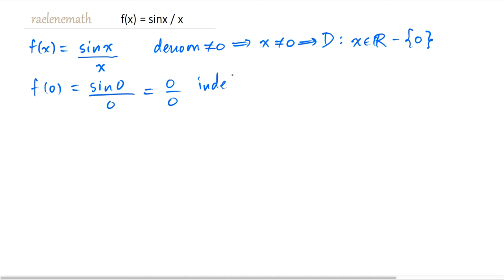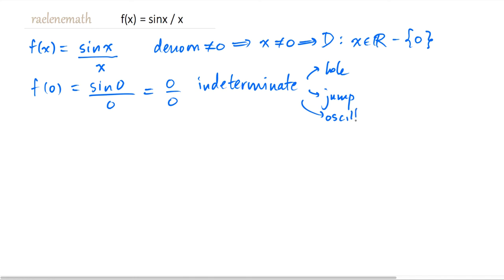So we expect on the graph of sine x over x that we either have a hole, or we have a jump, or we may have an oscillating discontinuity. The easiest way to find out whether we have a hole, jump, or oscillating discontinuity is just to look at the graph.